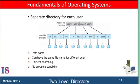The standard solution is to create a separate directory for each user. In the two-level directory structure, each user has his own user file directory. The user file directories have similar structures, but each lists only the files of a single user. When a user job starts or a user logs in, the master file directory is searched. The master file directory is indexed by user name or account number, and each entry points to the user file directory for that user. When a user refers to a file, only his own user file directory is searched. Therefore, different users may have files with the same name, as long as the file names within each user file directory are unique.